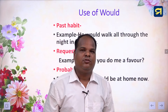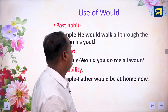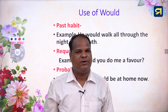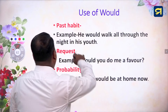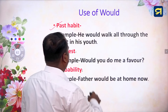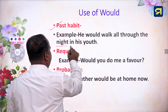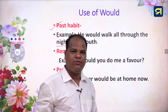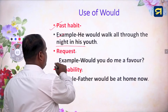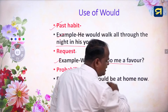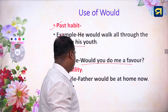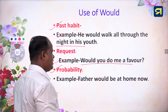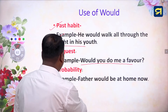Then, dear children, we have to discuss about the use of modal would. Would also can be used in different meanings such as past habit. Example: 'He would work all through the night in his youth.' Then, would can be used in the meaning of request. Such as: 'Would you do me a favour?' Would also used in the meaning of probability or possibility. Example: 'Father would be at home now.'